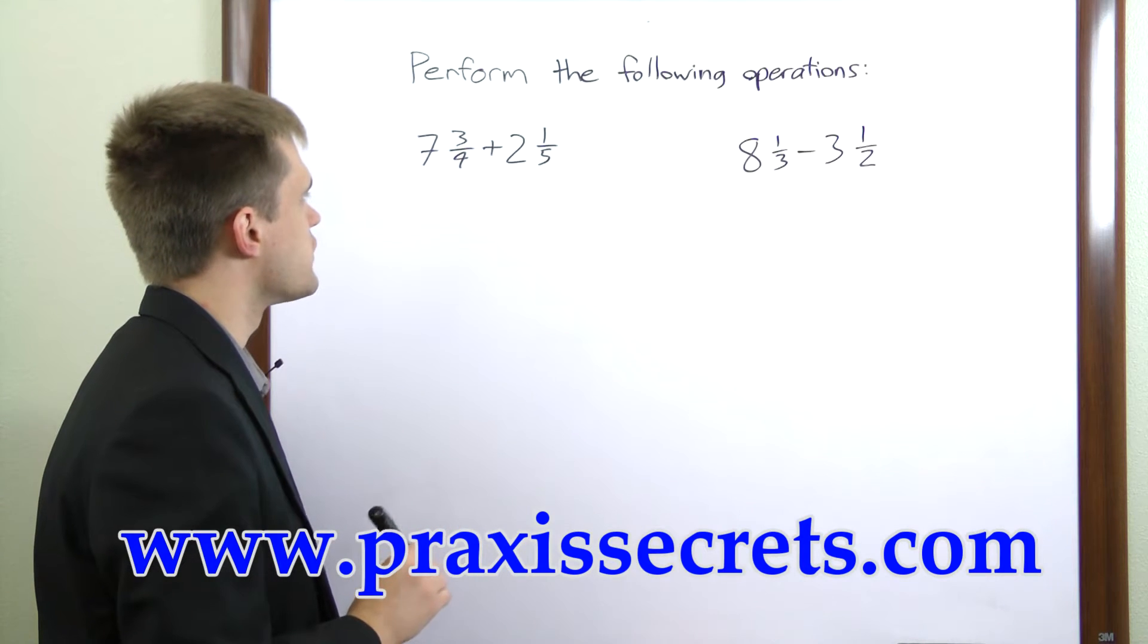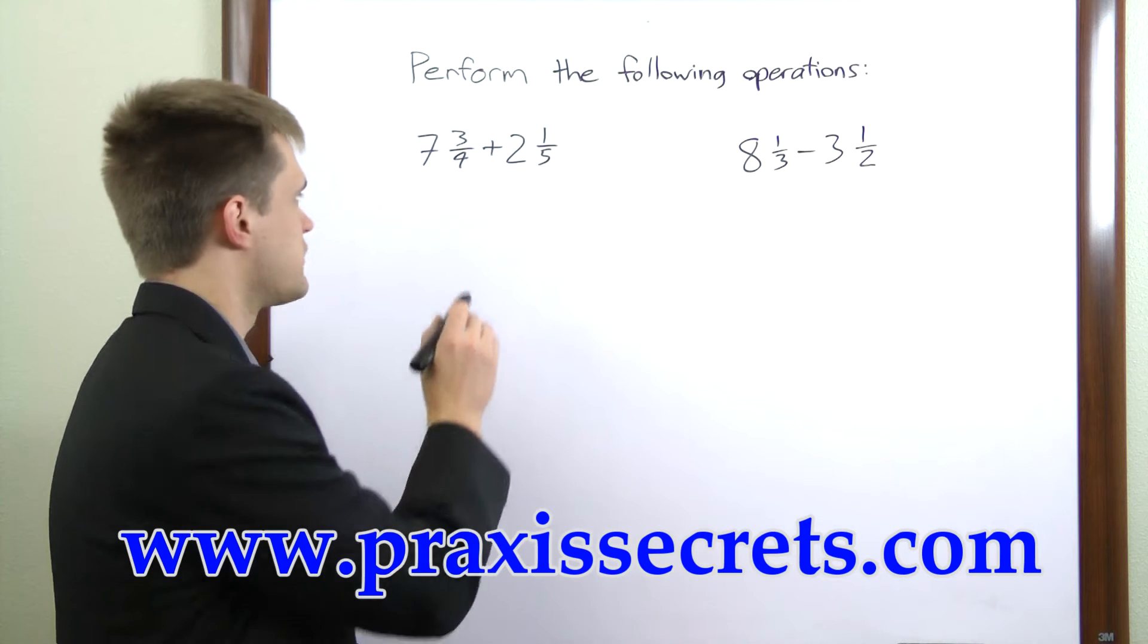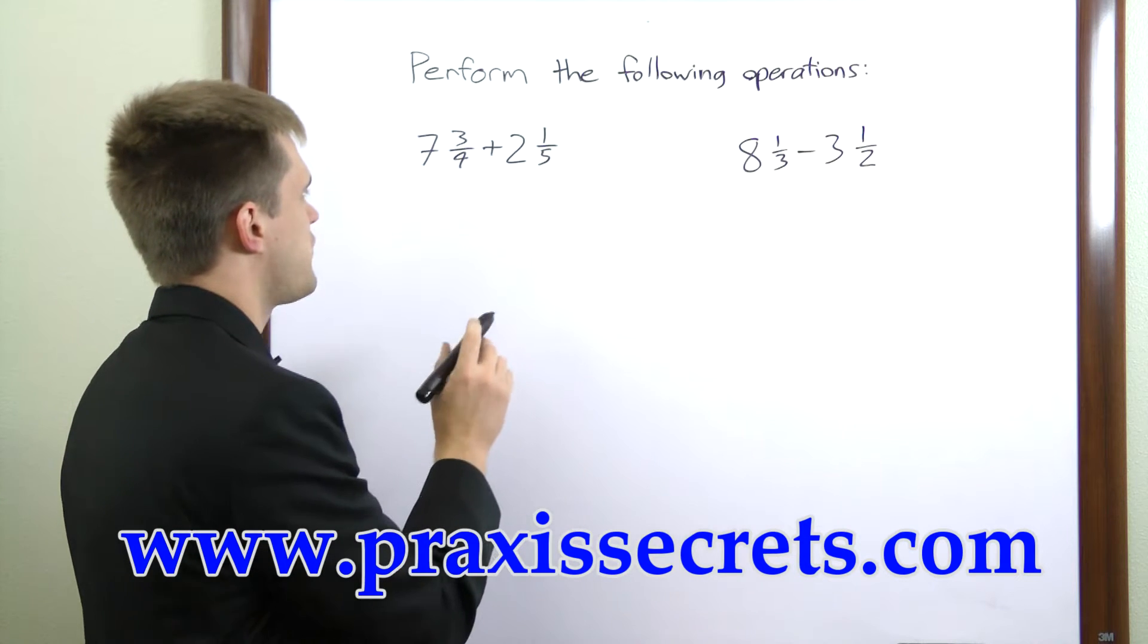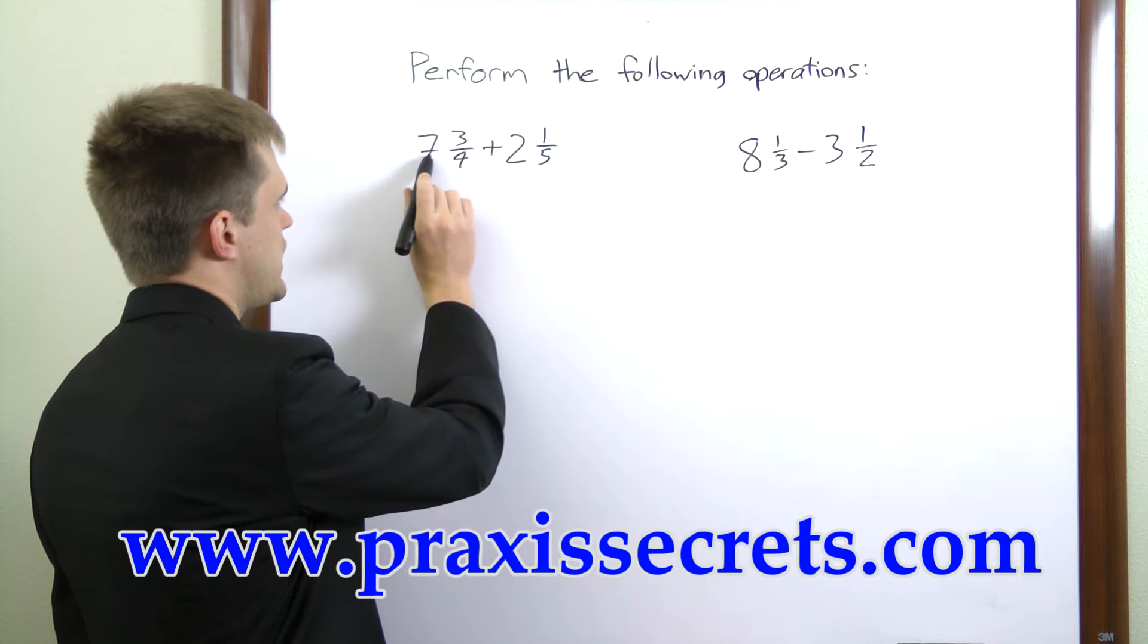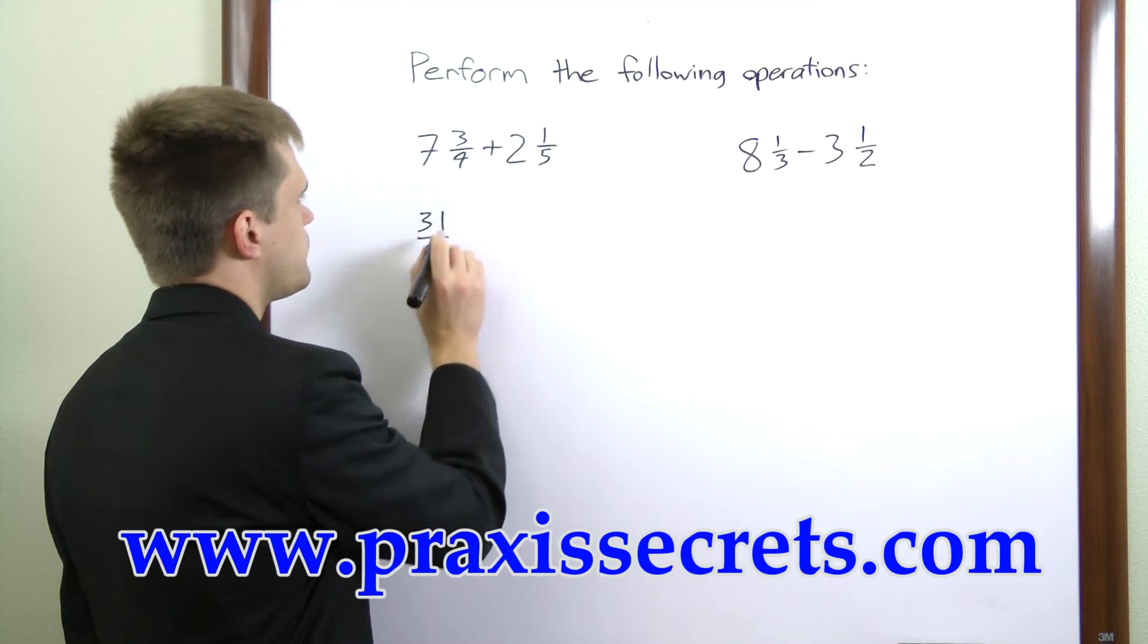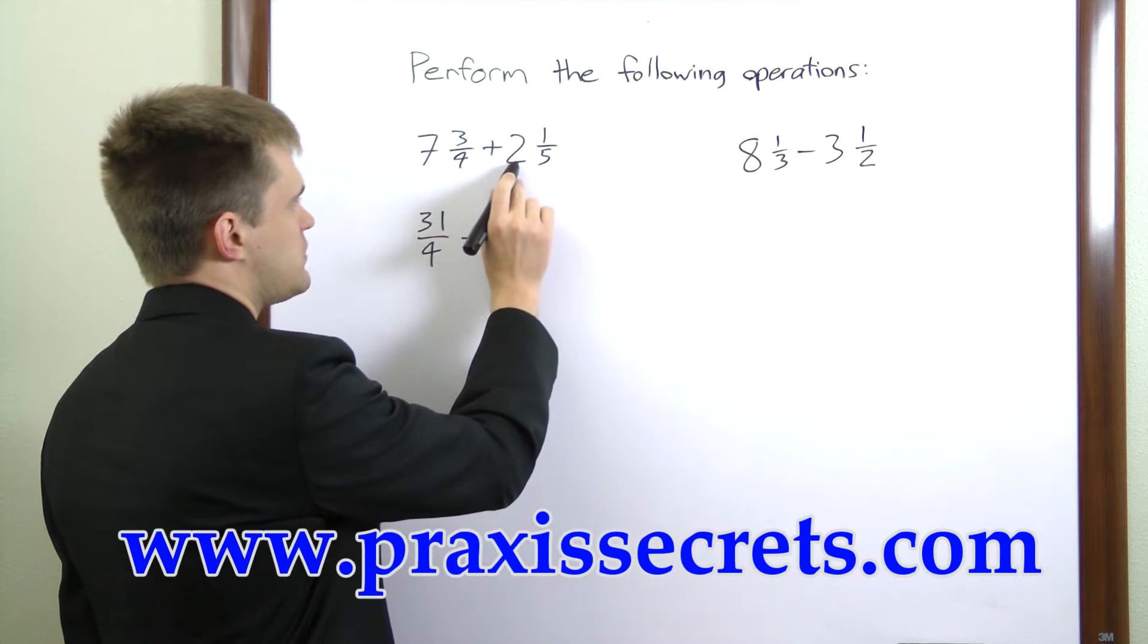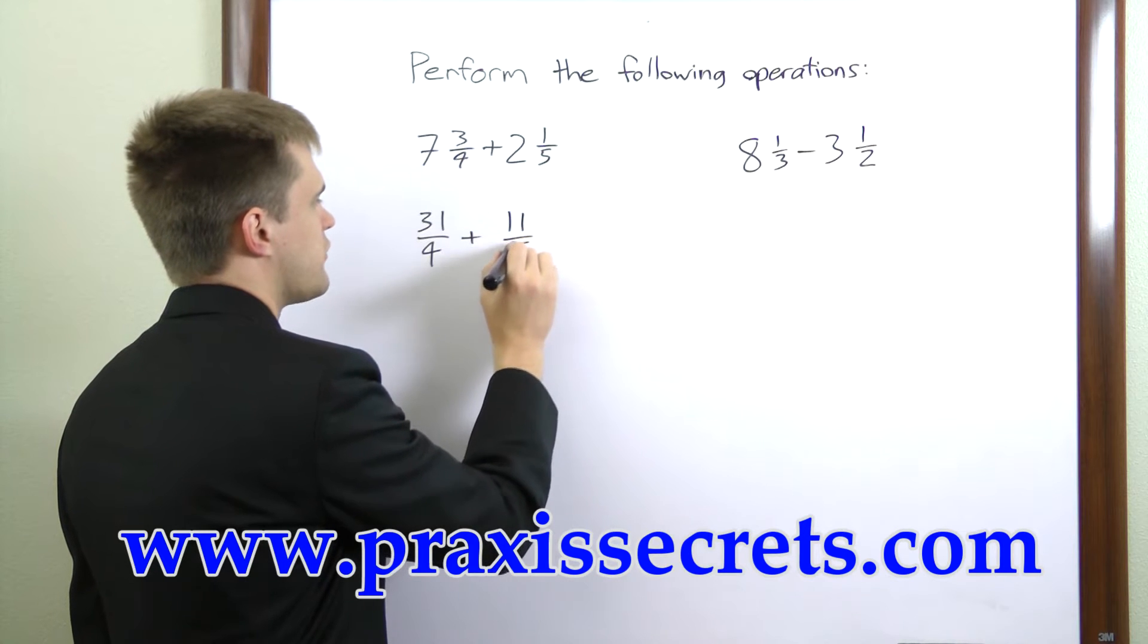First we have 7 and 3 fourths plus 2 and 1 fifth. The first thing we need to do is convert each of these terms to an improper fraction. From this one we have 4 times 7 is 28 plus 3 is 31 over 4 plus 5 times 2 is 10 plus 1 is 11 over 5.